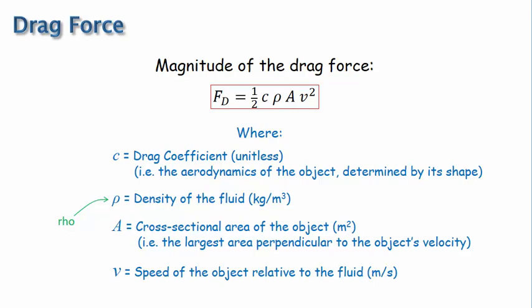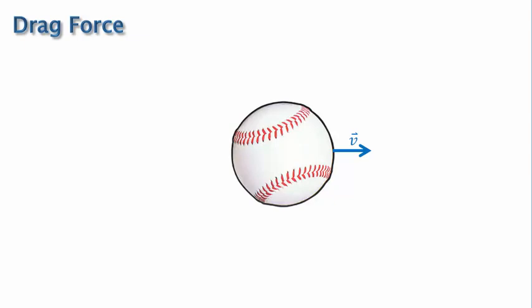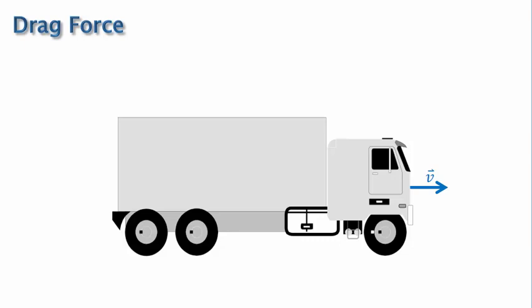which is the largest area of the object perpendicular to its velocity. For example, if a baseball is moving to the right, then its cross-sectional area is here. Or if a truck is moving to the right, then its cross-sectional area is roughly here.